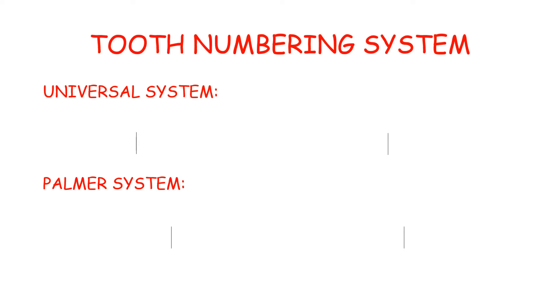There are some tooth numbering systems used for ease. Three of them are the universal system, the palmer system, and the FDI system.